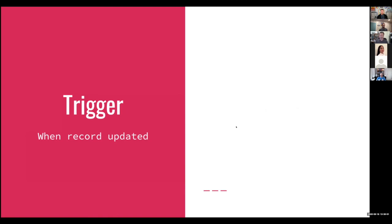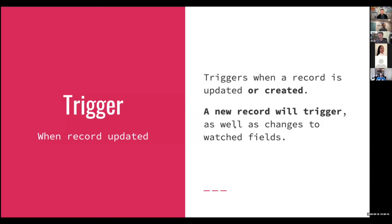One of the newest triggers is 'when a record is updated.' This also has an important caveat: it doesn't just trigger when a record is updated, but it also triggers when a record is created. Effectively, a blank field — if you're targeting a certain field with this particular trigger — a blank empty field will still trigger the automation. In some cases that might not make a big difference, but in certain cases it might actually mess things up. So be aware that a brand new record with an empty field being monitored by an automation trigger will still trigger that automation.